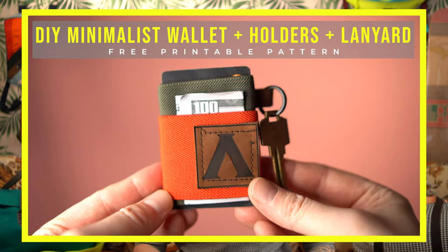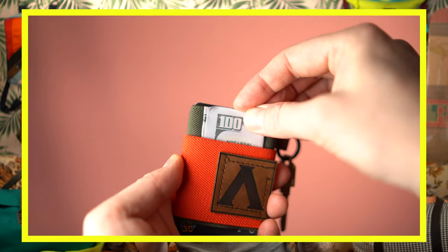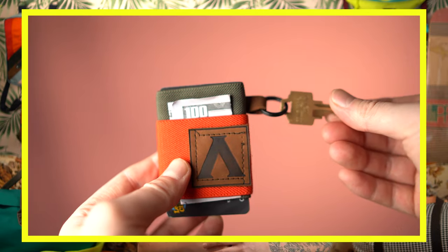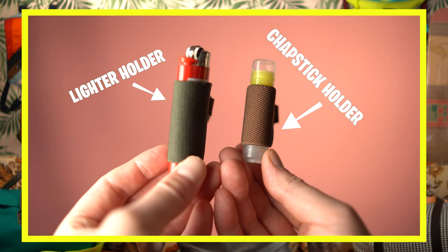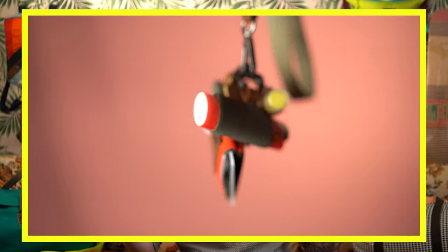We're gonna be making a minimalist wallet and this is really just a nice simple way to hold a few cards, some money, keys and other small things. We're also gonna make two different holders, one for a chapstick and one for a lighter. And to bring it all together we're gonna make a lanyard so you can hold all of them at once or hold them separately.